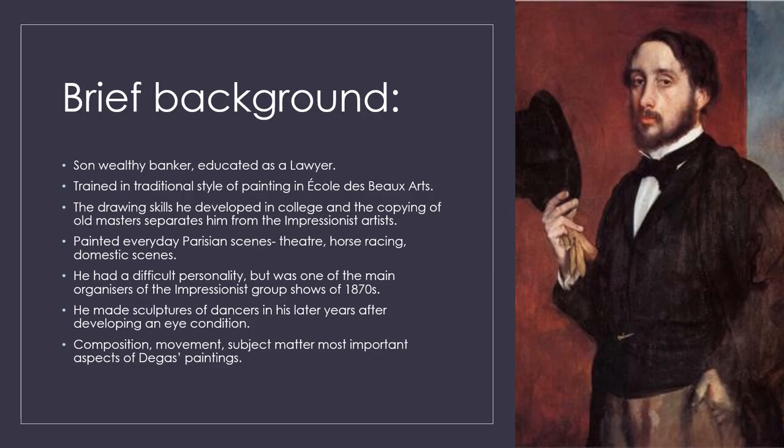He had a very difficult personality and was hard to get on with, but he was one of the main organizers of the Impressionist group shows. As Degas got older, his eyesight worsened and he eventually had to stop painting. He then made sculptures with his hands because it was something tactile.